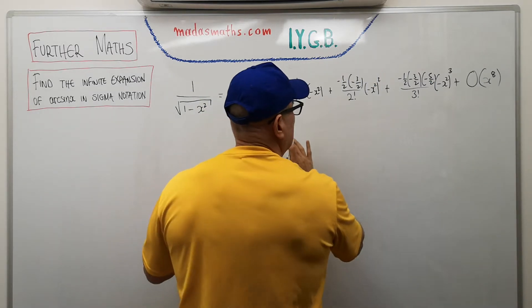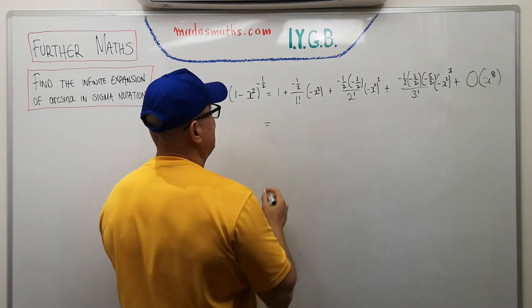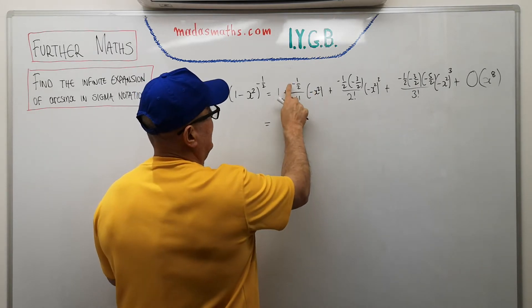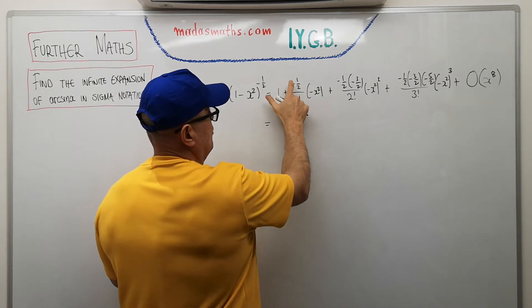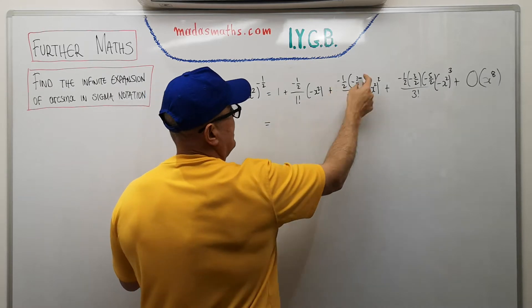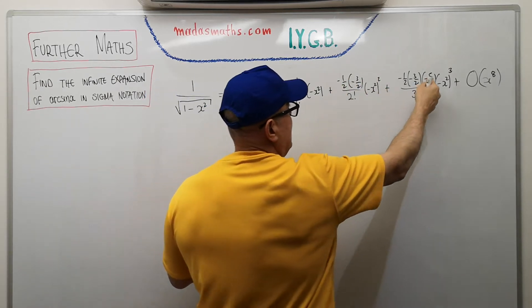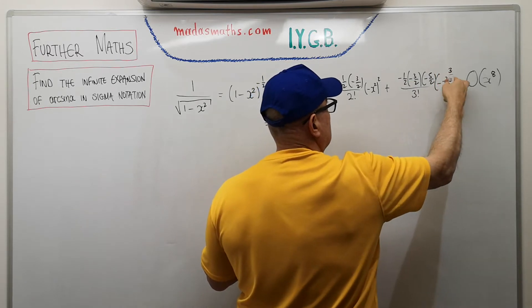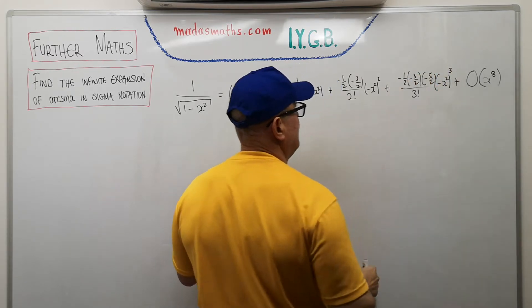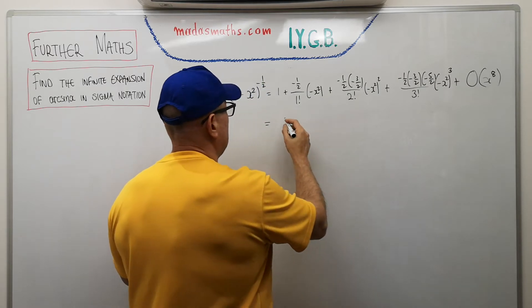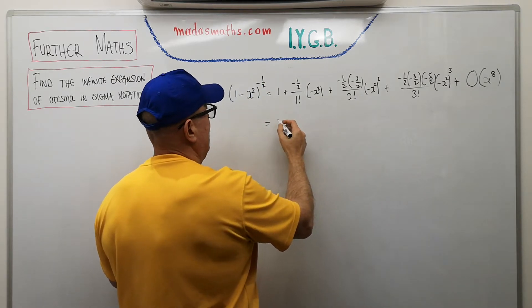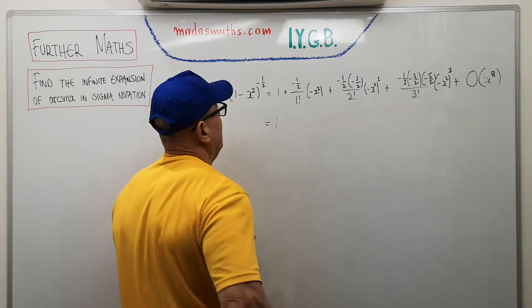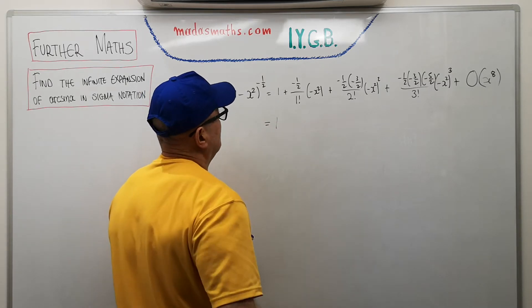3 factorial minus x squared or squared plus terms of at least order of x to the power of, that should be cubed there, power of 8, because of course they're going up in twos. Let's simplify this a little bit, just to see, to look for a pattern now. So first of all, let us notice that all the terms will be positive.